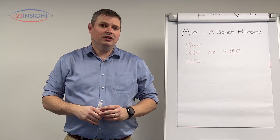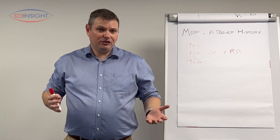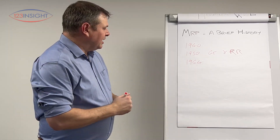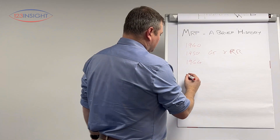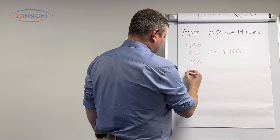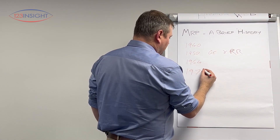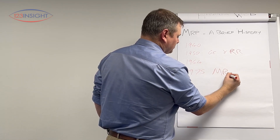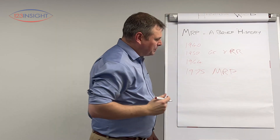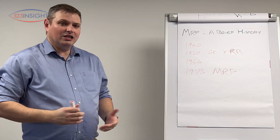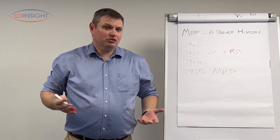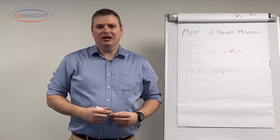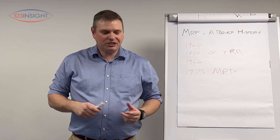MRP was a computerised system that looked at what material you needed, what you needed to make, and when you needed to do it. Orlicki then put this into his 1975 book, called, funnily enough, Material Requirements Planning, or MRP. MRP as we know it was then starting to take off, sold by IBM and used in companies such as Black & Decker, across Europe and the States.